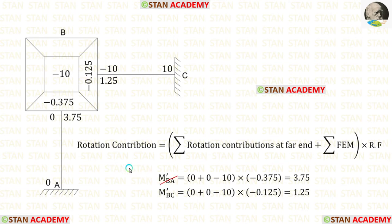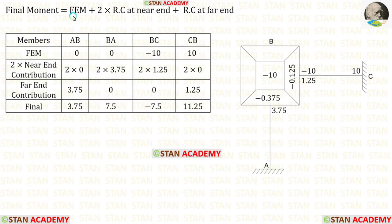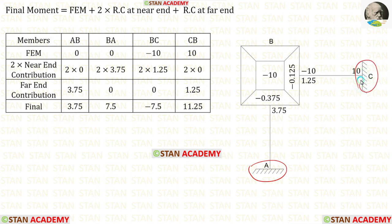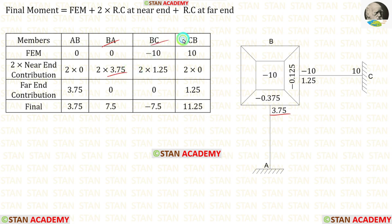Let us apply the values of M dash BA and M dash BC. In this analysis, we can do only one cycle. Now we are going to calculate the final moments. The formula is: fixed end moment plus 2 times rotation contribution at near end plus rotation contribution at far end. Let us make a table. First let us enter all members, then the fixed end moments, then 2 times the near end contributions. For AB and CB it is 0, for BA the contribution is 3.75, and for BC it is 1.25.